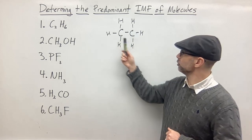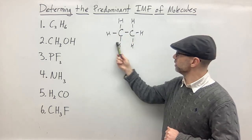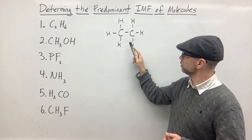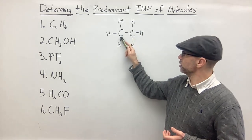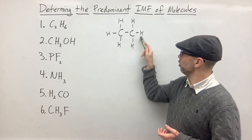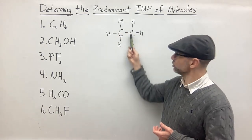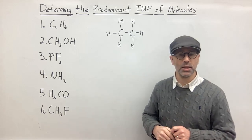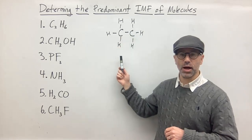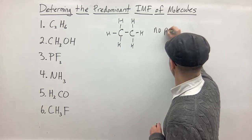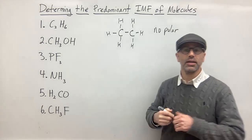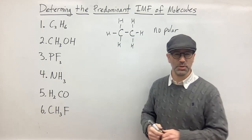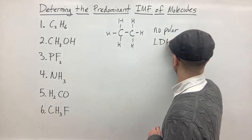Even if we count that tiny difference as still being polar, we would look at the molecule and note that we have four groups around each carbon — that's tetrahedral. The carbon-carbon bond is non-polar because it bonds two identical atoms. The tetrahedral geometry on each side is symmetrical, so that would balance out any polarity in the bonds. So this is a non-polar molecule, and because it's non-polar, the only IMF available is London dispersion forces. So LDF is the predominant force.